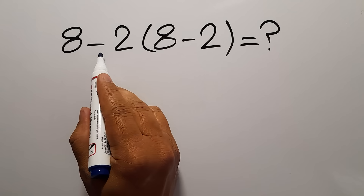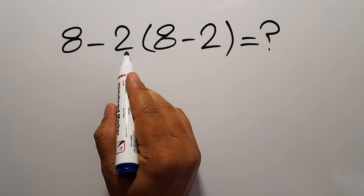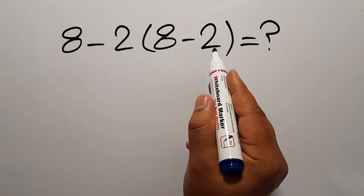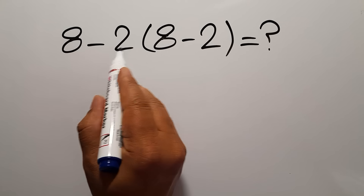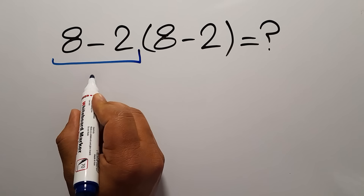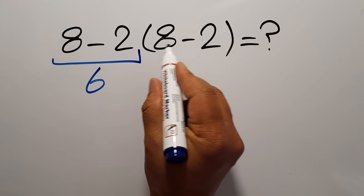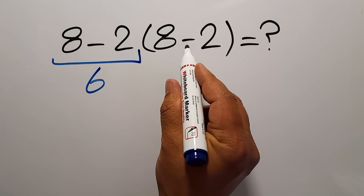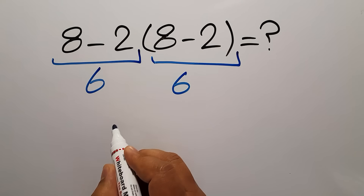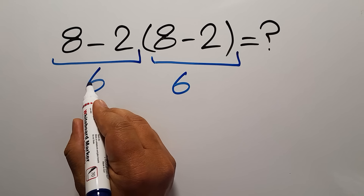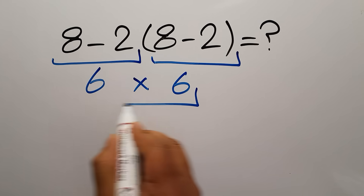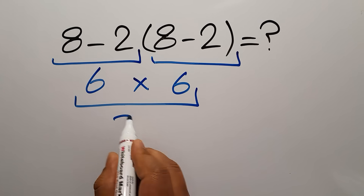8 minus 2 times 8 minus 2. 8 minus 2 is just 6, and again we have here 8 minus 2. So we have 6 times 6, which equals 36.